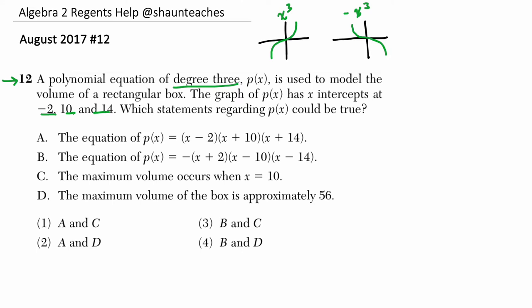So in terms of my graph now, let's see. If this is negative 1, 2, and then 1, 2, 3, 4, 5, 6, 7, 8, 9, 10. Let's mark this. Negative 2 is a root. 10 and then 14. So 11, 12, 13, 14. So these are our 3 roots.